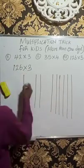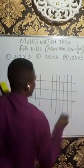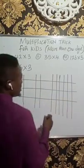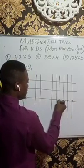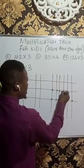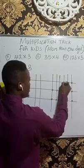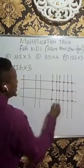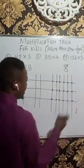And we are multiplying by 3, so you draw 1, 2, and then 3. So let's take the points of intersection. We have 1, 2, 3, 4, 5, 6, 7, 8, 9, 10, 11, 12, 13, 14, 15, 16, 17, and 18. Since we got 18, write 8 and carry 1.